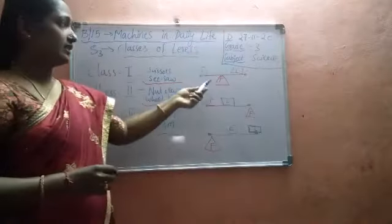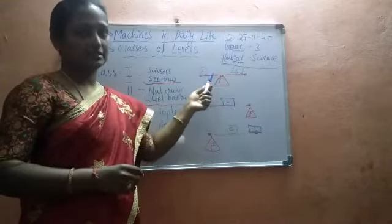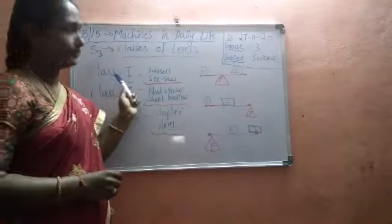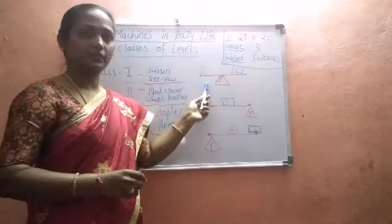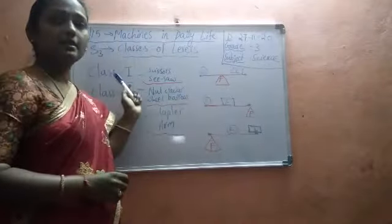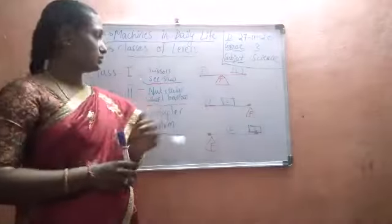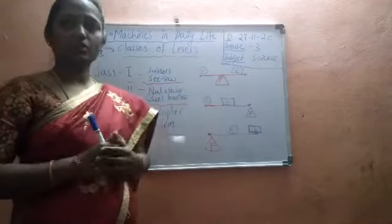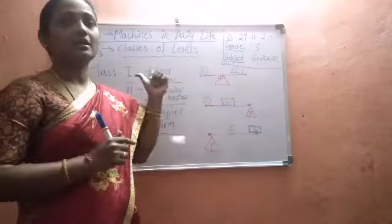When the fulcrum — the fixed point — is at the center of the lever, we call it a class 1 lever. Examples of class 1 levers are scissors and see-saw. In both, you can see the fixed point is at the center.